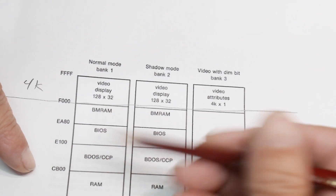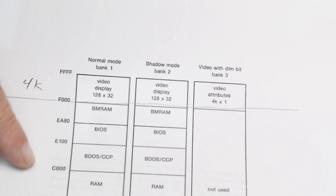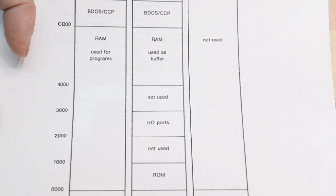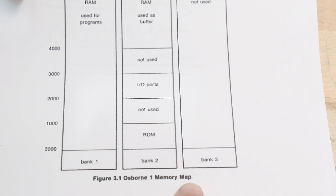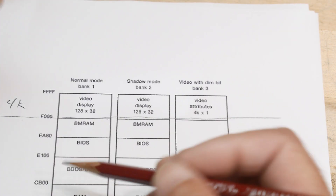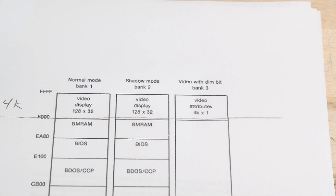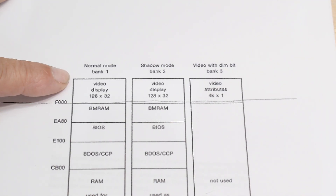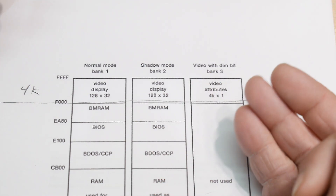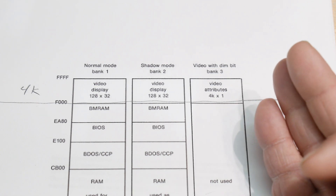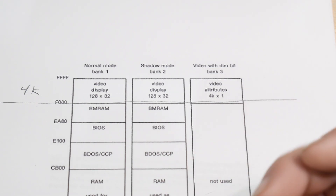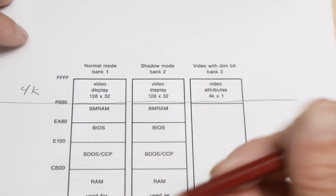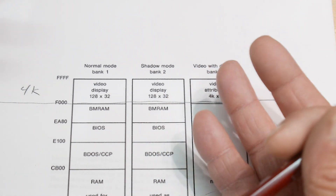There's a little bit of extra stuff in here — the BIOS lives here, BDOS and stuff. That's pretty typical for CP/M systems. Programs typically start at 100, and the very bottom is reserved for interrupts. So it's very typical. What I wanted to talk about today is how they use this 4K and how it functions. It's one of the most fascinating things on the Osborne — the actual video display.